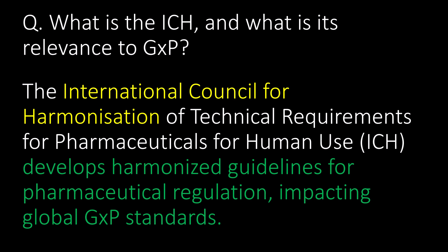What is the ICH and what is its relevance to GXP? ICH is the International Council for Harmonization of Technical Requirements for Pharmaceuticals for Human Use. It develops harmonized guidelines for pharmaceutical regulations, impacting global GXP standards.